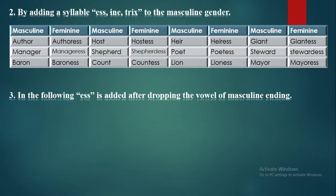The second way to form the feminine is by adding a syllable: -ess, -ine, or -trix to the masculine gender. Examples: author/authoress, manager/manageress, baron/baroness, host/hostess, shepherd/shepherdess, count/countess, lion/lioness, poet/poetess, giant/giantess, steward/stewardess, mayor/mayoress.